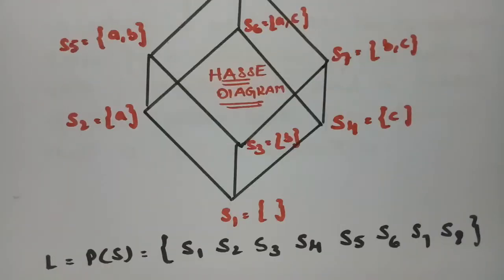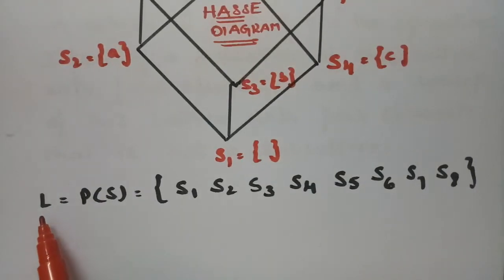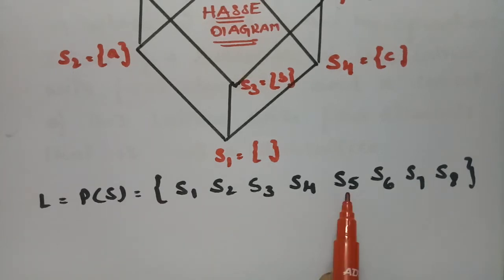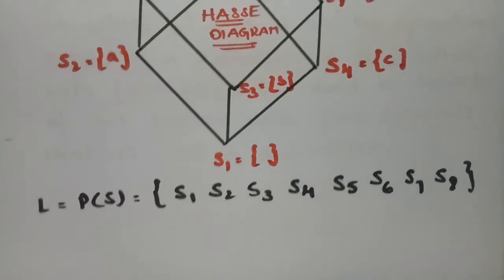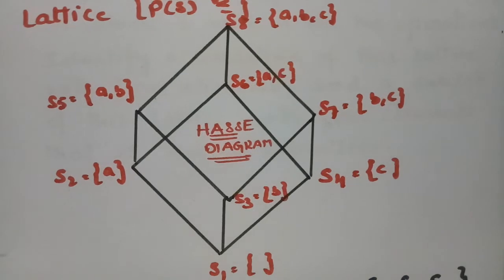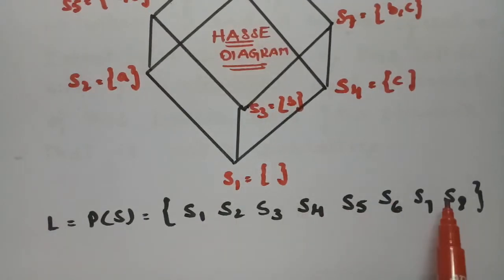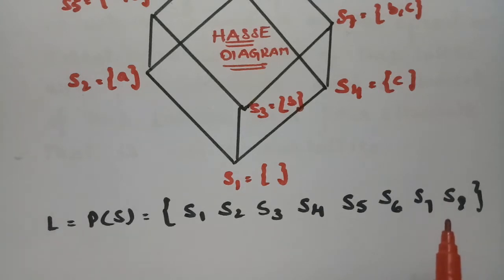Therefore the main lattice L is equal to the set of all subsets {S1, S2, S3, S4, S5, S6, S7, S8}. We have to take a subset with four elements and show that it is a sublattice of the main lattice L.